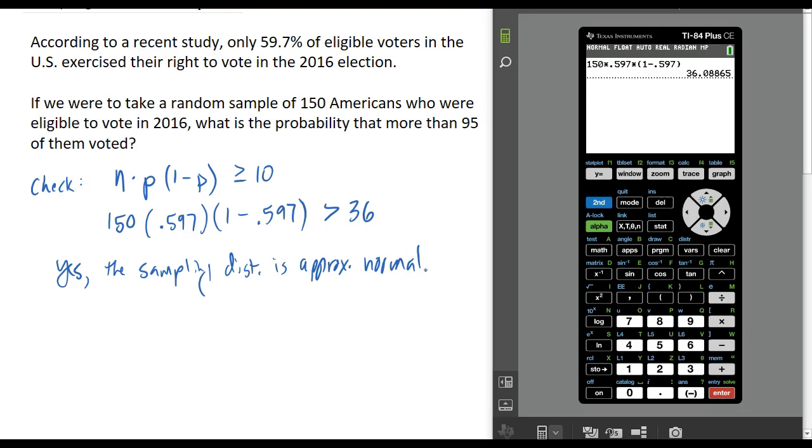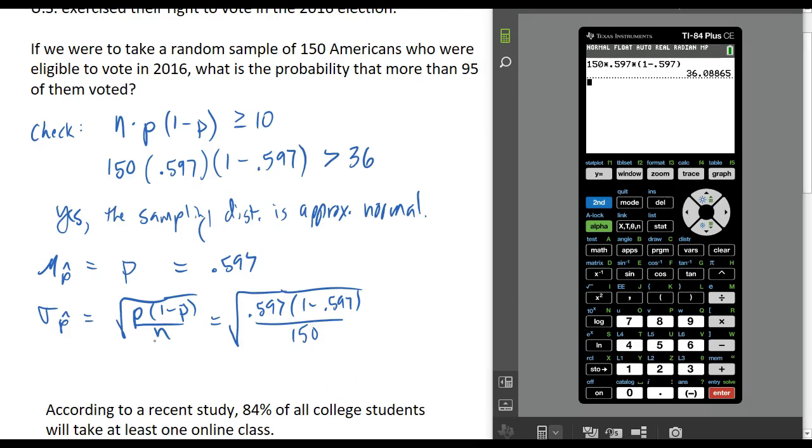The next step is to understand what the question is asking us and what this distribution looks like. The two most important things: the mean of the sampling distribution for sample proportions is the population proportion, and the standard deviation for this distribution is defined as the square root of my population proportion times 1 minus the population proportion divided by the sample size. For the mean, I'm going to have 0.597, and for the standard deviation, it's going to be the square root of 0.597 times 1 minus 0.597 divided by 150. We're being asked to find the probability that our sample proportion is more than 95 out of 150.